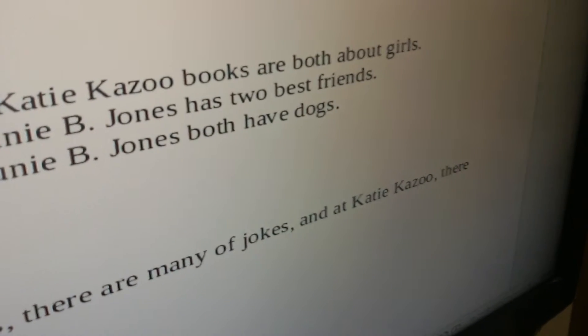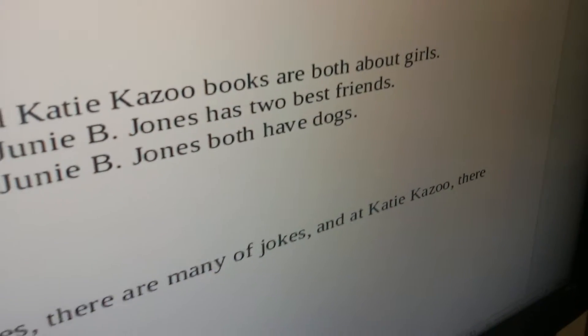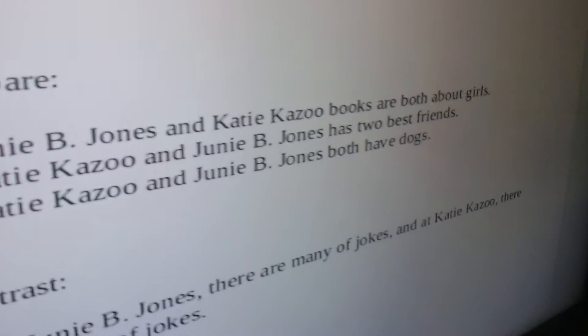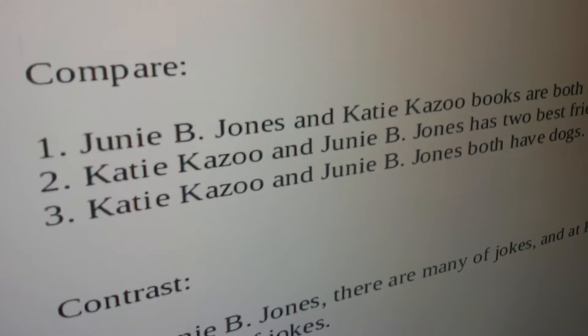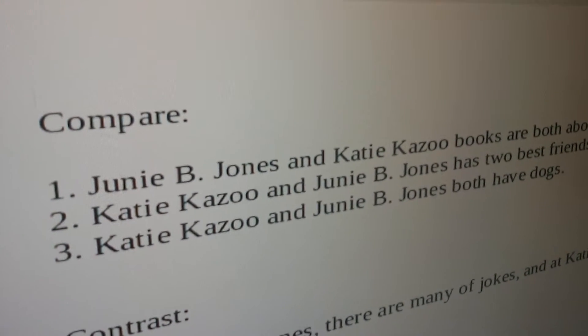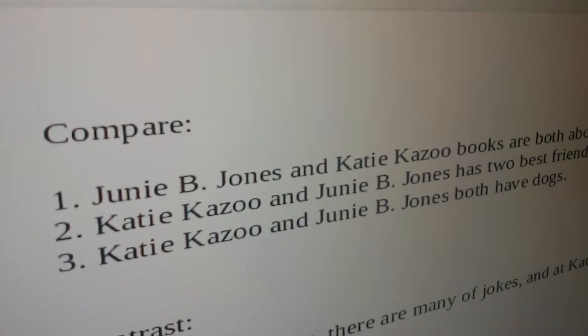We just found out that between points two and three, one says 'has' and the other says 'have.' I asked which one is right and you said 'have.' Have is the right one. And why is that? Well, we look at 'Katie Kazoo and Junie B. Jones' — that's five or six words, and we can say just one word for two people. Any two people. Any idea?